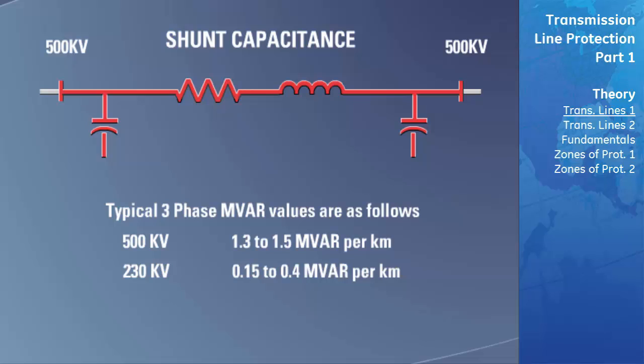Caution needs to be taken when transmission lines are used with high voltage potentials. Due to the Ferranti effect, the shunt capacitance on the line can become so large that the voltage on the far end of the line can rise higher than the normal line potential.